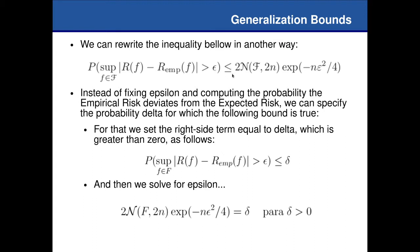This probability is smaller than or equal to two times the Shattoui coefficient function, shown here. This is the Shattoui coefficient function considering two samples, each one with n examples, so we have altogether 2n instances or 2n input examples. And given the exponential of minus n epsilon squared divided by four.